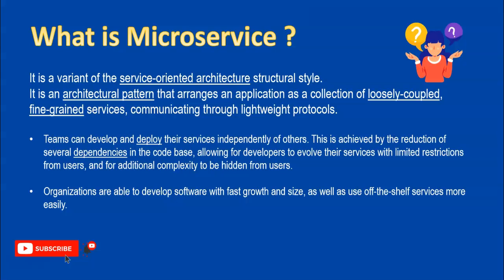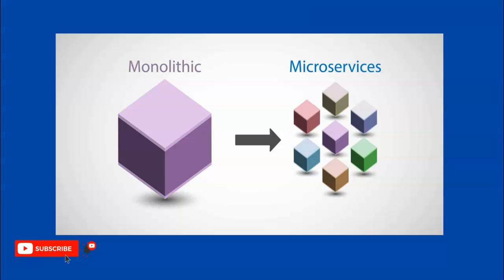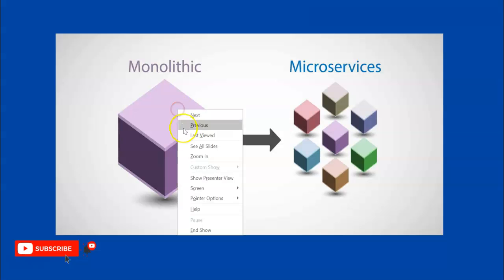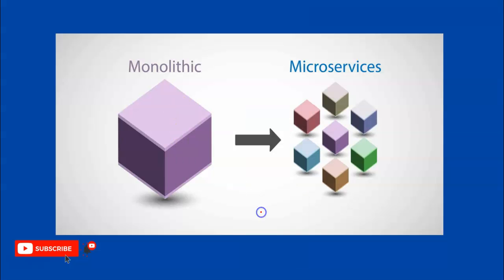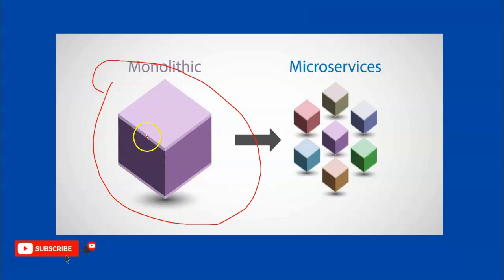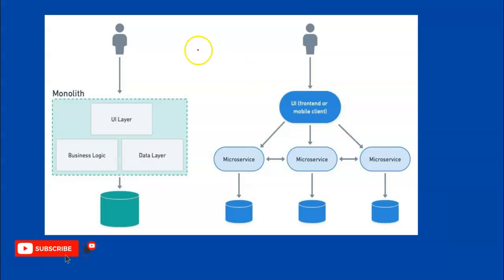If you want to remove any service, you can easily remove it; if you want to add a service, you can easily add it. Before microservices, we created monolithic architectures where all components, third-party libraries, and supporting class libraries were kept inside a single application. In monolithic architecture, the UI layer, business logic layer, and data layer are in a single application or single code repository, interacting with a single database.